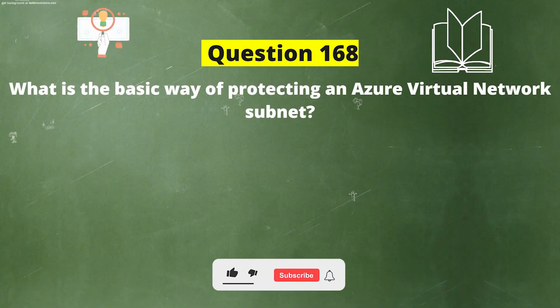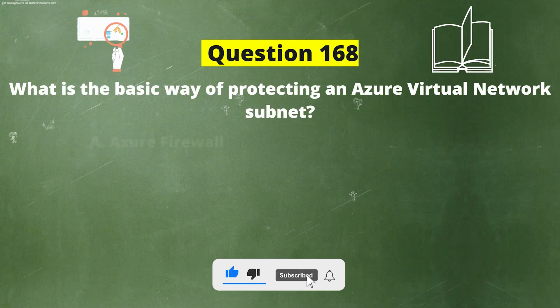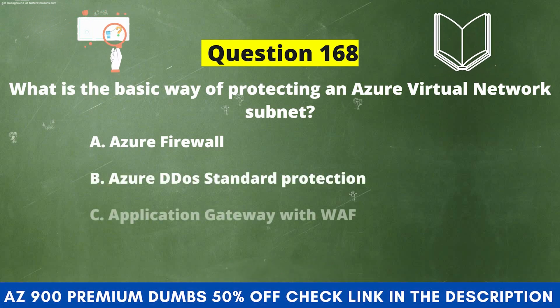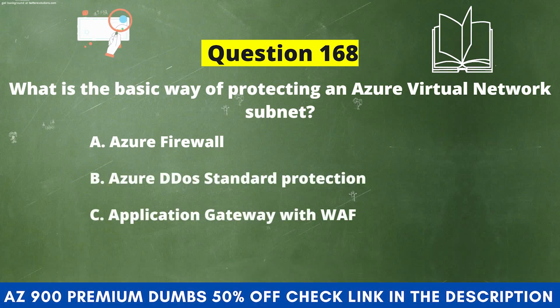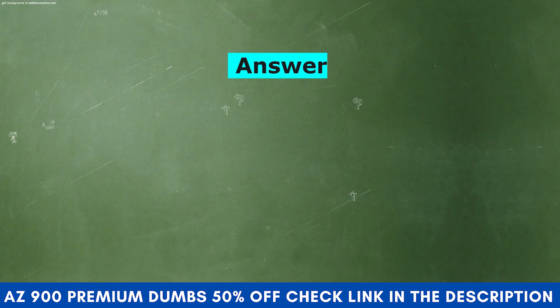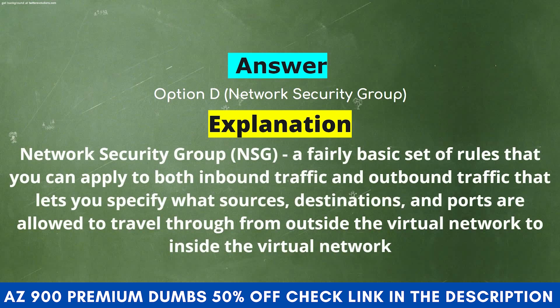What is the basic way of protecting an Azure Virtual Network subnet? Option A: Azure Firewall. Option B: Azure DDoS Standard Protection. Option C: Application Gateway with WAF. Option D: Network Security Group. The correct answer is Option D, Network Security Group. NSG is a fairly basic set of rules that you can apply to both inbound and outbound traffic that lets you specify what sources, destinations, and ports are allowed to travel through the virtual network.